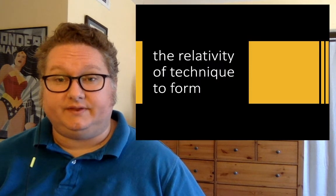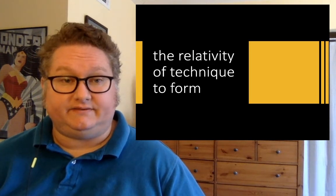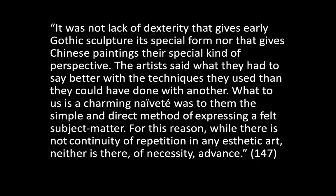In Dewey's account, there are a few major theses articulated in this chapter. One is the relativity of technique to form. Dewey says: it was not lack of dexterity that gives early Gothic sculpture its special form, nor that gives Chinese paintings their special kind of perspective. The artist said what they had to say better with the techniques they used than they could have done with another. What to us is a charming naivete was to them the simple and direct method of expressing a felt subject matter. For this reason, while there is not continuity of repetition in any aesthetic art, neither is there of necessity advance.